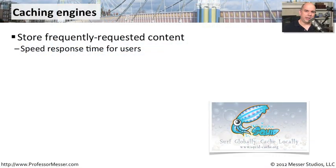In large environments, we have the challenge of providing everybody inside of our environment with quick access to internet resources or other resources that might be located on the network. If you have 10 people going out to the internet, you may be able to handle that amount of throughput. If there are 100 users that need to access resources on the internet, that might be a little bit more of a challenge.